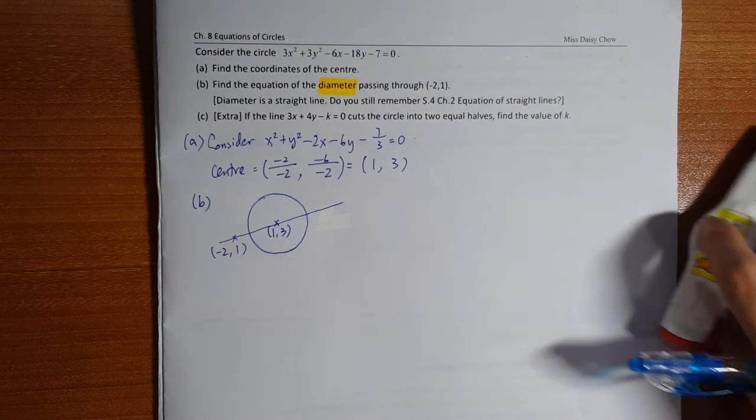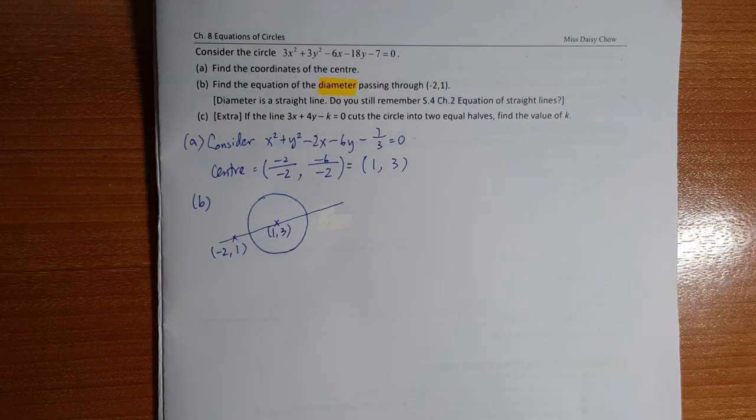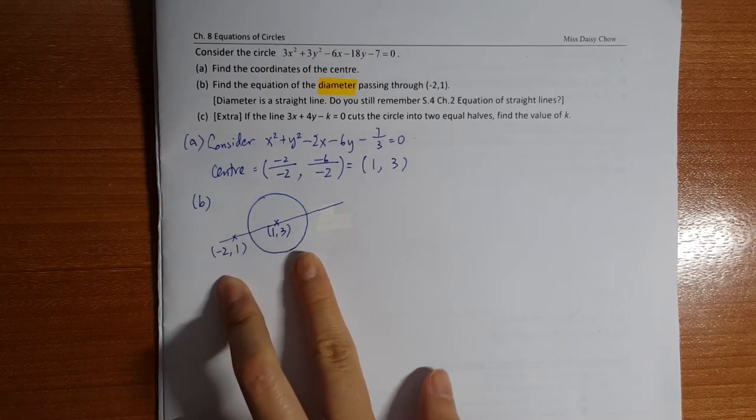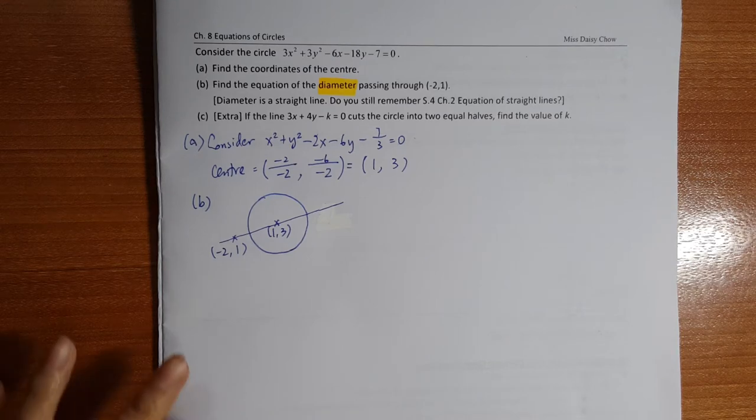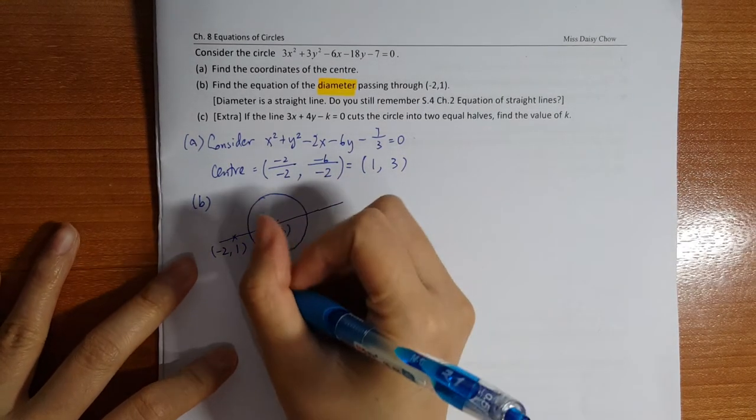And then the question asks you to find out the equation of a diameter. Equation of diameter, remember, it is a straight line, so it's actually asking you equation of straight line. It gives you two points, then asks you equation of straight line. This is really very easy.